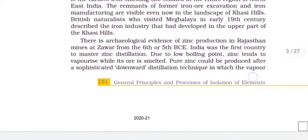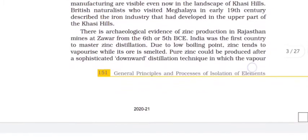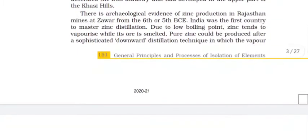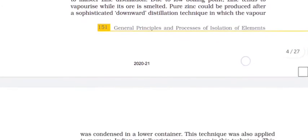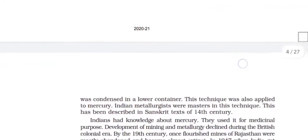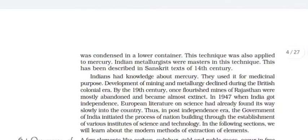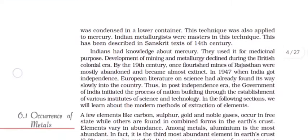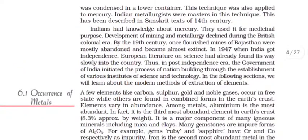There is archaeological evidence of zinc production in Rajasthan mines at Zawar. From the 6th or 5th BCE, India was the first country to master zinc distillation. Due to low boiling point, zinc tends to vaporize while its ore is smelted. Pure zinc could be produced after a sophisticated downward distillation technique in which the vapor was condensed in a lower container. This technique was also applied to mercury. Indian metallurgists were mastered in this technique.